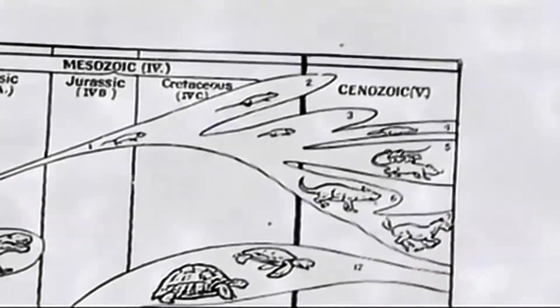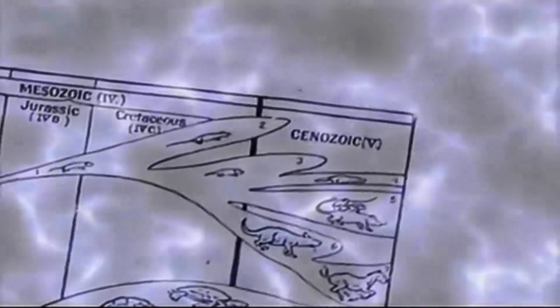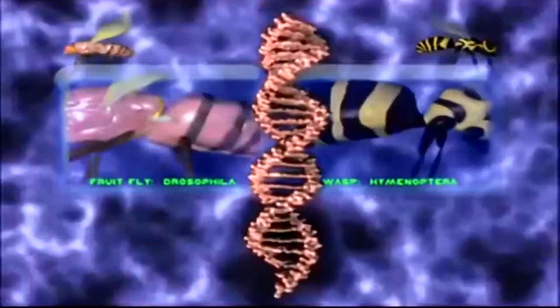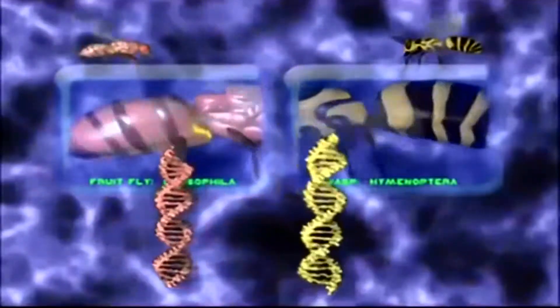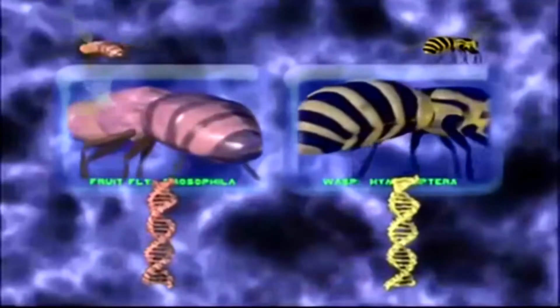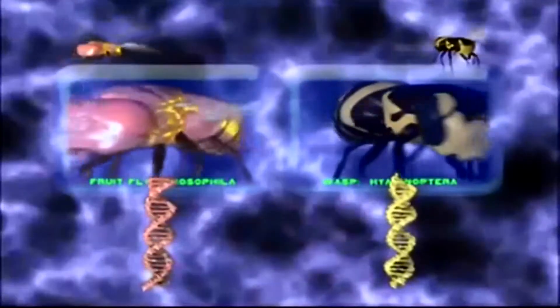For example, biologists consider the body segments of fruit flies and wasps as homologous. Darwinism predicts these similarities should be due to the same gene, but in fact different genes account for the development of body segments in these insects. This contradicts the idea that homology must point to common ancestry.